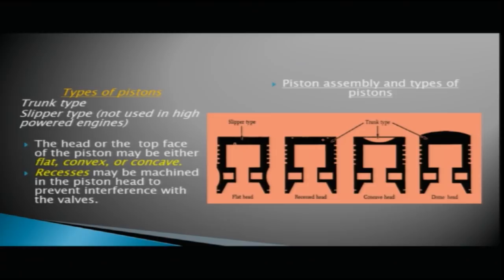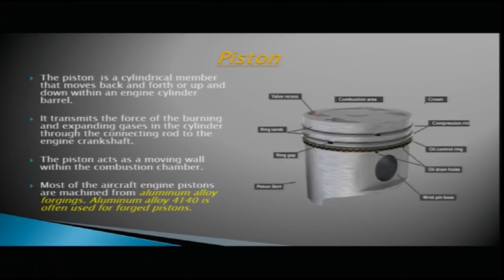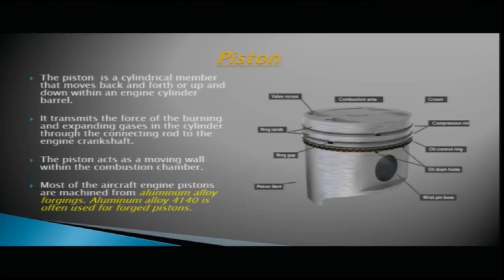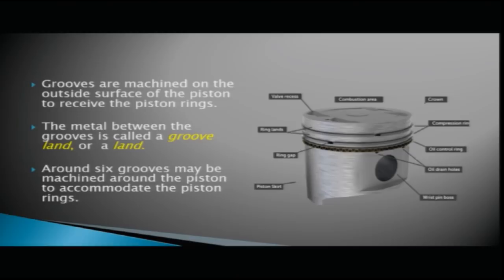On top of the pistons you have recesses machined to prevent interference with the valves. The outer surface of the piston has grooves to receive the piston rings. The metal between the grooves is called a groove land or a land.